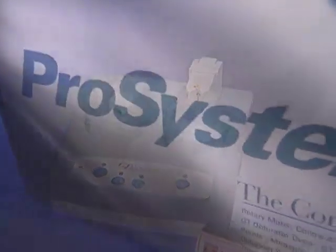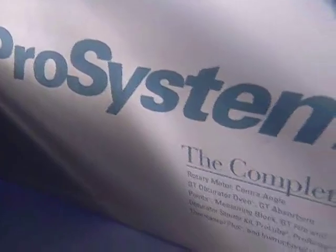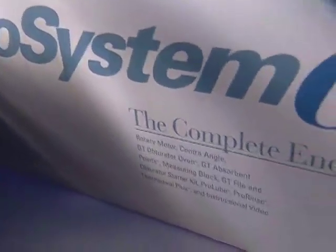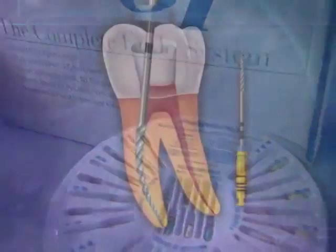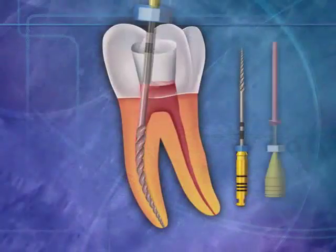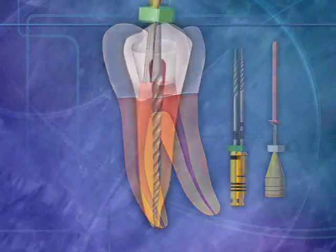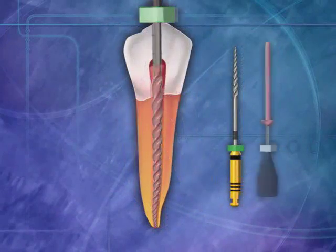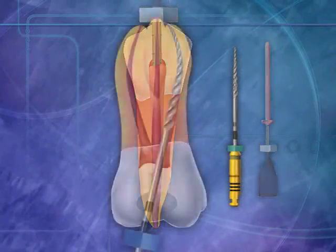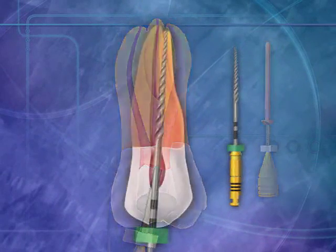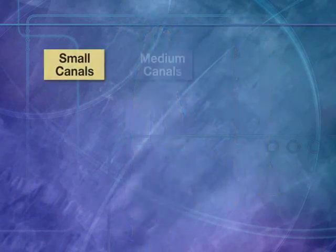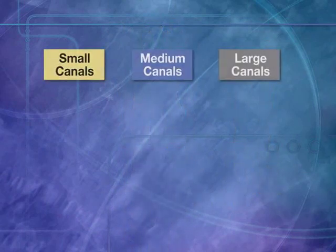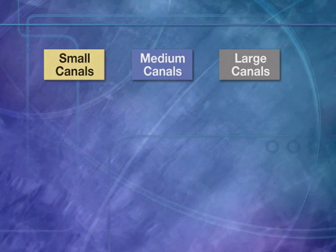ProSystem GT files were developed to answer the full range of anatomic challenges. They are designed to replicate the natural shapes of root canals. Simply determine the size of the canal you are about to treat — small, medium, or large. This is called the shaping objective.